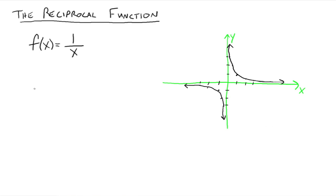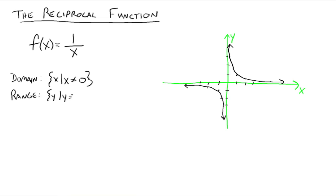Now let's talk about the domain and range. The domain would be all x's such that x is not equal to 0. Every x value is used to the right and to the left, except when x is 0 — because the graph doesn't hit the y-axis. For the range, all y values are being used except for 0. We never hit the x-axis, but every single y value above and below it is used, so the range is all real numbers except when y is 0.